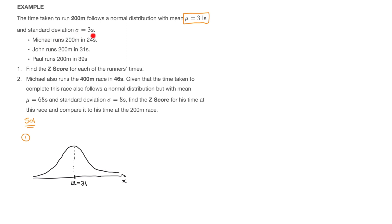The standard deviation is 3 seconds. That tells us that the horizontal distance from the mean to the two points of inflection on this curve — which would be here and here — is equal to 3 units. The distance from the mean is equal to the standard deviation, which is 3, so that's 31 minus 3, which is 28, and over here we have 31 plus 3, which is 34. The points of inflection are where the curve changes concavity — the middle part is concave down, and the two outer parts are concave up.